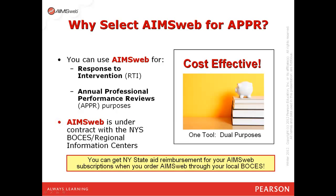Why select AIMSweb for APPR? First, it's cost effective. You have one tool that you can use for dual purposes. First and foremost, you can always use AIMSweb for response to intervention. This is what it's been designed for, and this is really where schools become successful when they use AIMSweb as part of their RTI program.